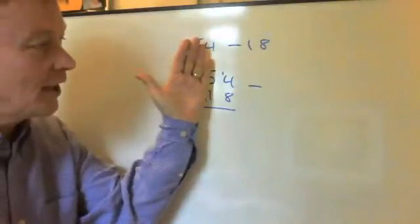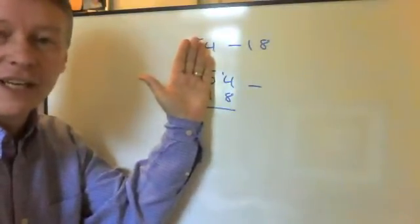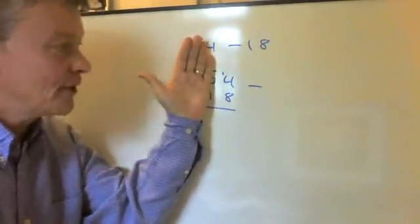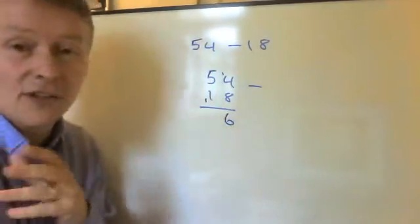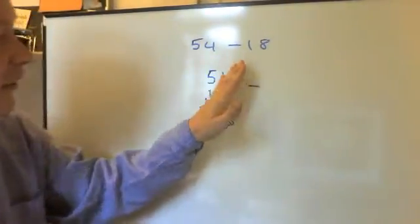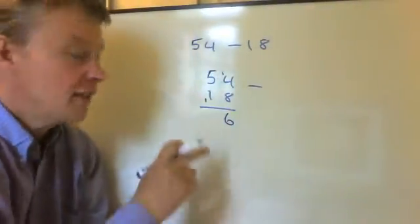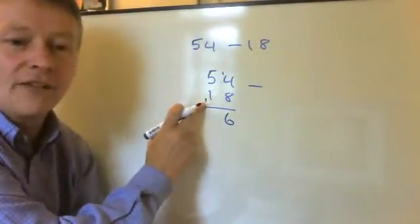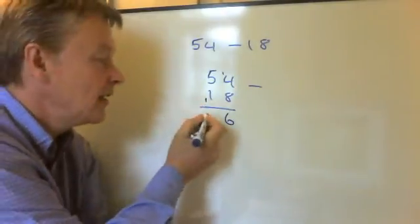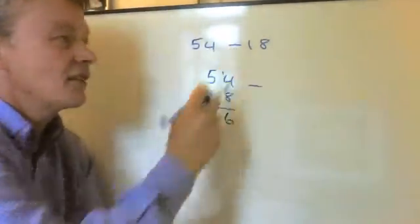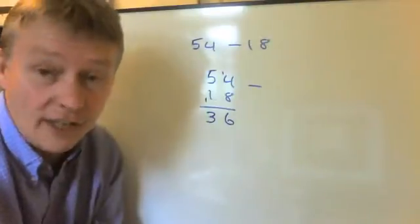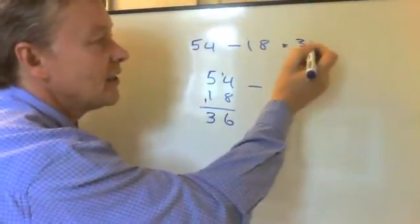So now I'm in a calculation where I have 14 take away 8. Well, 14 take away 8 is 6, so I write the 6 down. And then on the other side, I have 5 take away 1, take away 1. So 5 take away 2 is 3. So the answer to this question, 54 take away 18 is 36.